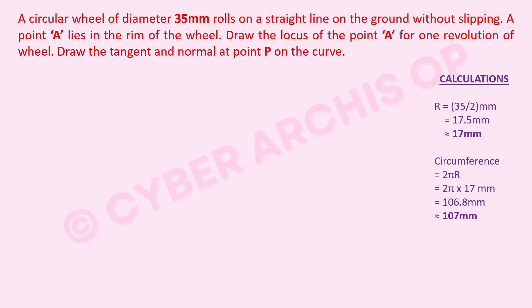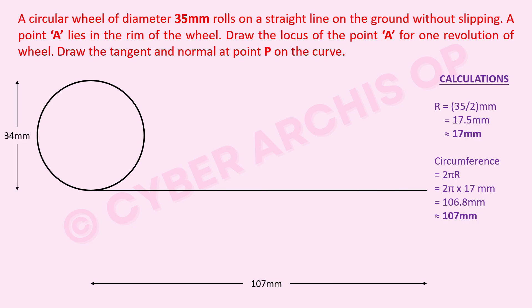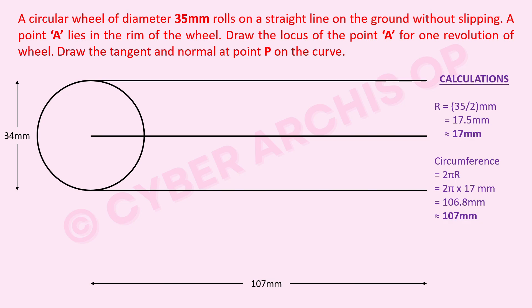Draw a circle with radius 17 mm. Then draw the base line on which the circle will roll — the length of this line is 107 mm. Draw the dimension below the line so there is no margin issue. Note: we are using a 34 mm diameter circle. Mark the center line, as the center stays at a fixed height throughout the rolling motion.